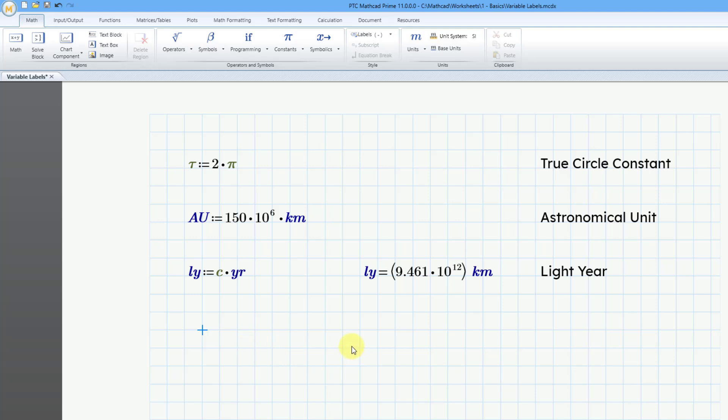So let me try evaluating this. Here we have lightyear. Let's do LY and then equals. And it gives the value. But I'm going to delete the M for meters and type in AU and then click outside. And here we can see that the value of a lightyear is equal to 6.3 times 10 to the fourth astronomical units.